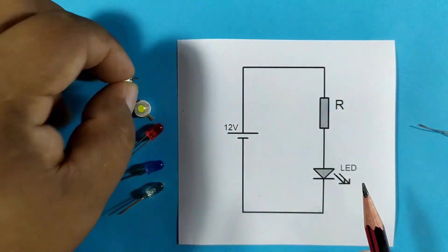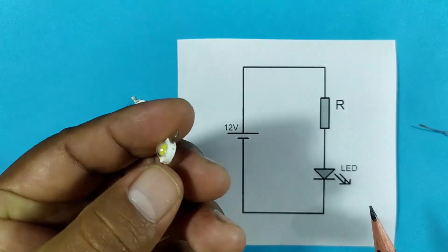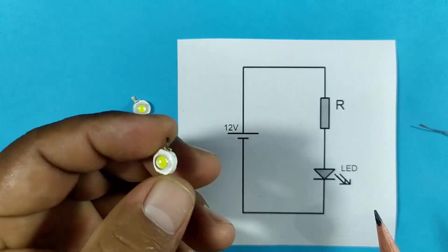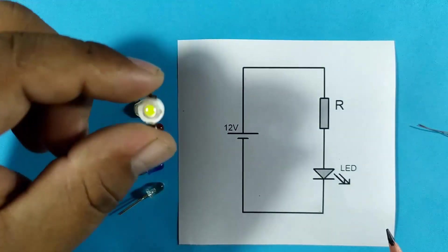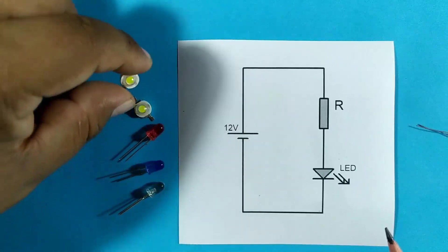Here I have some power LEDs, these ones here. In this case, they say that they work at 3 volts. So we are going to find out how many volts they work with and the current they consume.